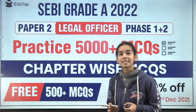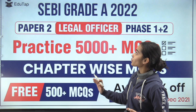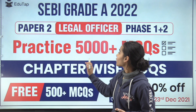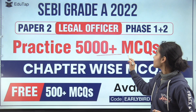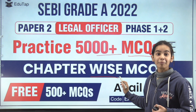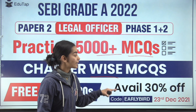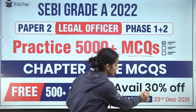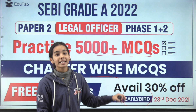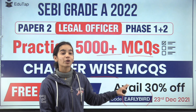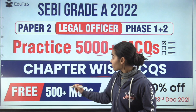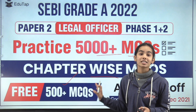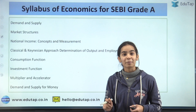Before starting the session, Aditab has brought for you SEBI Grade A legal officer practice 5000 plus MCQs chapter-wise. This is available at 30% off if you use the code 'Early Bird', available for today only. There are also free 500 plus MCQs being provided by Aditab.